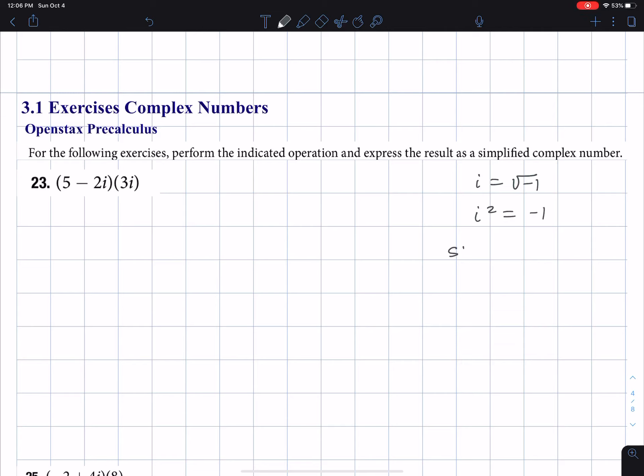And we also, what we're going to call the standard form for a complex number, a plus bi.